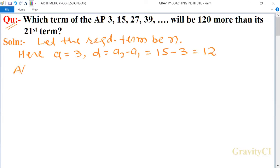According to the question, an is equal to 120 more than its 21st term, so a21 plus 120. We know that the formula of nth term of an AP is a plus n minus 1 times d.